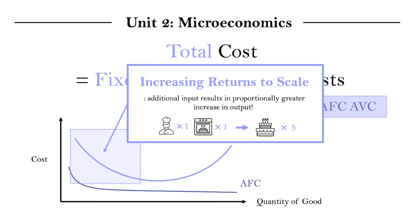And now we're going to double our input. So we get 2 bakers and 2 ovens, doubling our costs. And what we end up seeing is that the output increases not to 10 cakes, but actually to 15 cakes. So it triples instead.